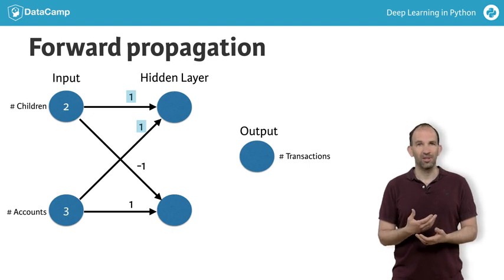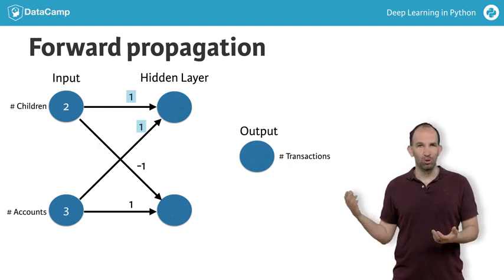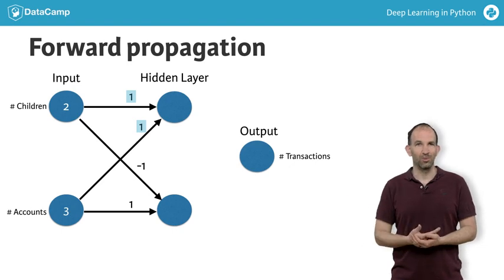To make predictions for the top node of the hidden layer, we take the value of each node in the input layer, multiply it by the weight that ends at that node, and then sum up all those values. In this case, we get 2 times 1 plus 3 times 1, which is 5.